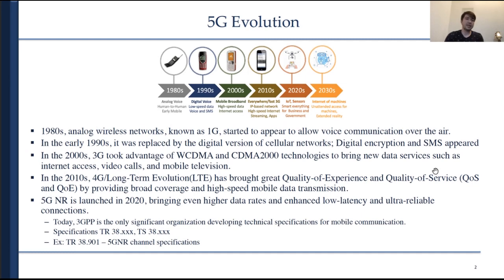In the 1980s, analog wireless networks known as 1G started to appear to allow voice communication over the air — that was the main purpose. Then with fast development in the 1990s, it was replaced by the digital version of cellular networks which we call 2G, and it also gave a boost for new services.